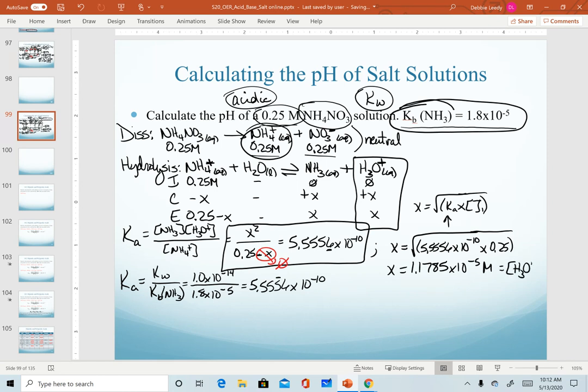Since we already know our hydronium concentration, that means we can simply take the negative log of this concentration value, and that will give us our pH.